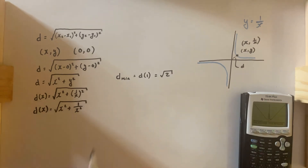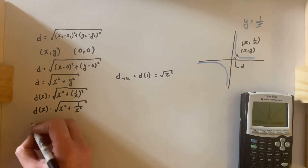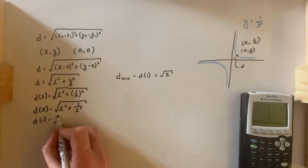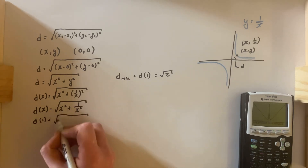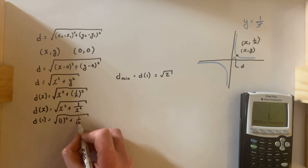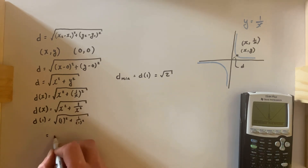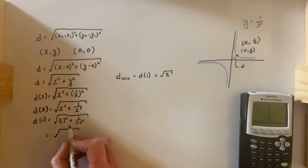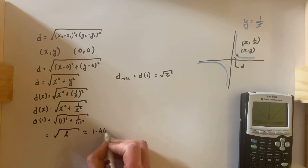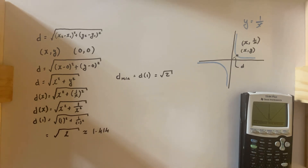When x is 1 we get the minimum value for d, which is equal to the square root of 2. Indeed, looking at our equation, d of 1 gives the square root of 1 squared plus 1 over 1 squared, which is the square root of 1 plus 1, which is the square root of 2, approximately equal to 1.414. And that is the problem answered.